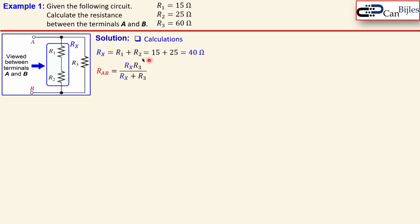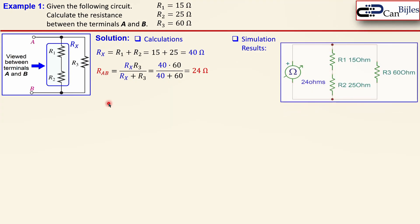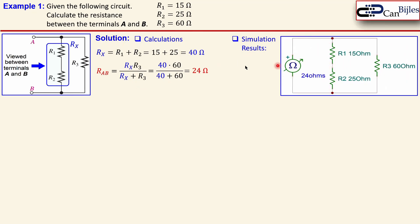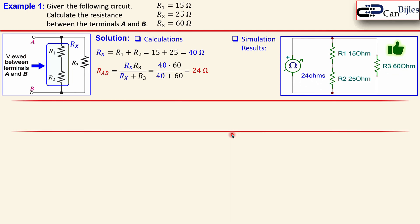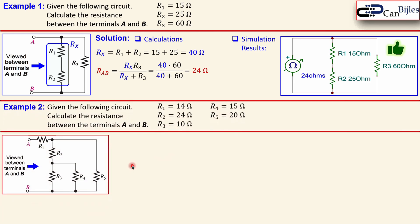R_ab is then Rx parallel to R3. Using the product-over-sum formula for two resistors: 40 times 60 over 40 plus 60 = 24 ohms. The simulation result confirms this — the ohmmeter between the two nodes reads 24 ohms — verified.